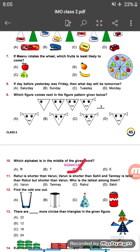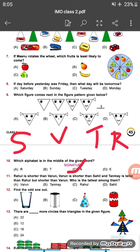Question eleven: Rahul is shorter than Varun, Varun is shorter than Sahil, and Tanma is taller than Rahul but shorter than Varun. Who is the tallest among them? Remember, these questions are often confusing so read them twice. Arranging them: Rahul is shorter than Varun, Varun is shorter than Sahil, and Tanma is between Rahul and Varun.